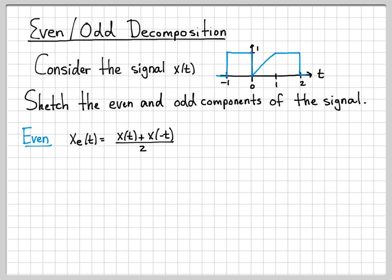So if I wanted to sketch the signal xe(t), I need to know what x(t) looks like, which is pretty easy because it's sitting right here. It was given in the problem. I need to know what x(-t) looks like, the time reversed version of it. I need to add those two signals together and then divide by 2. So let's go ahead and get the time reversed version of the signal. That's pretty easy. We just flip it on the time axis. So this is indeed x(-t).